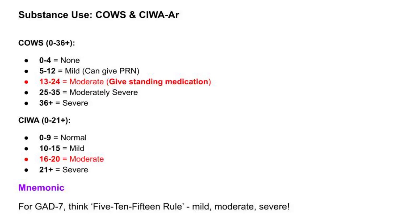Now let's look at substance use scales: COWS and CIWA. I'll attach a downloadable file for you to review the assessments. You need to know what categories and scores apply. The best way to learn these is through practice questions. COWS scores range from 0 to 36+: 0 to 4 is none, 5 to 12 is mild (PRN treatment), 13 to 24 is moderate (standing medication), 25 to 35 is moderately severe, and 36+ is severe.